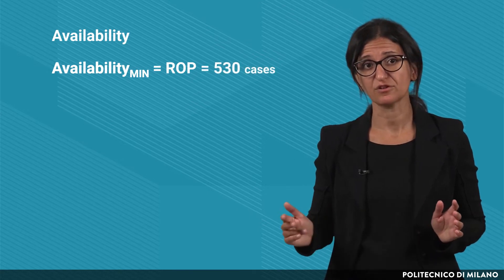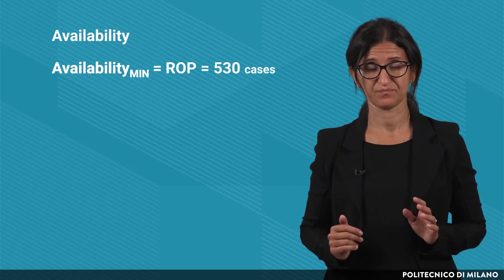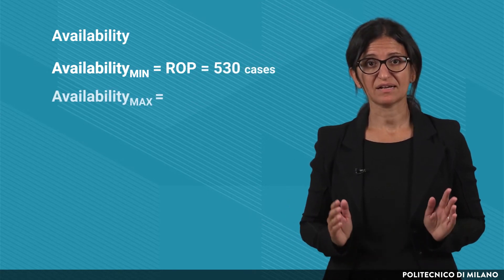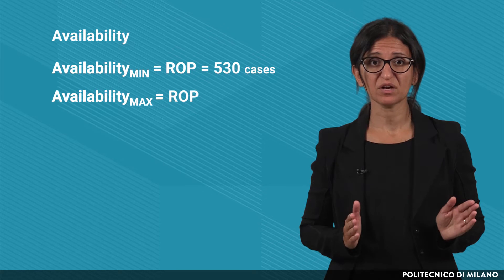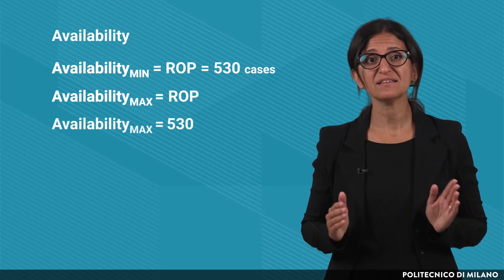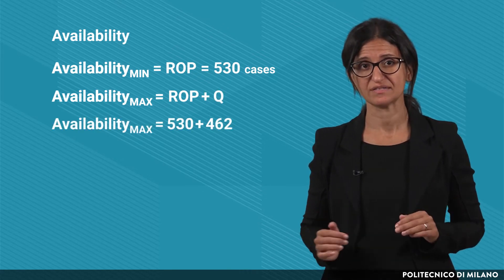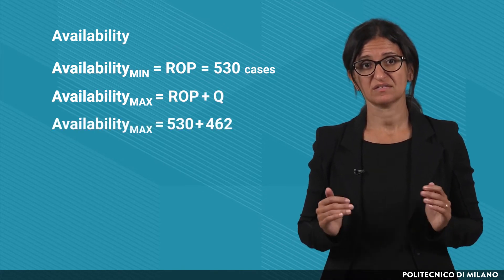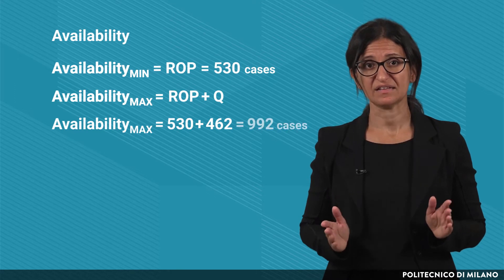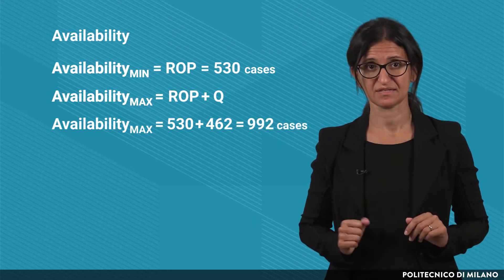Now let's consider the availability. The minimum value of the availability is equal to the reorder point quantity, 530 cases. The maximum value is the sum of the reorder point and the order quantity Q of 462 cases, thus resulting in 992 cases.